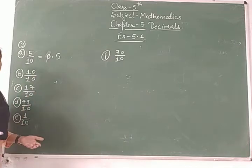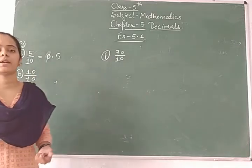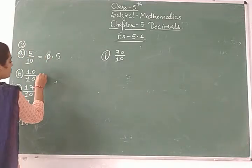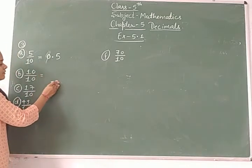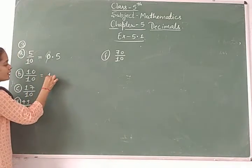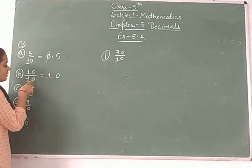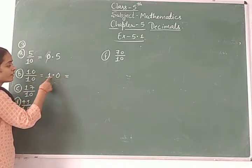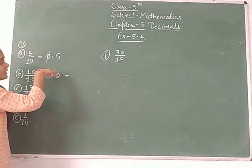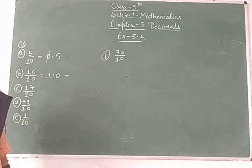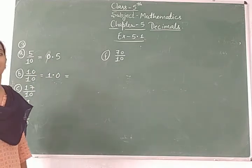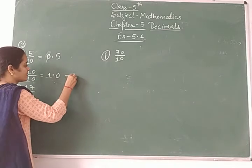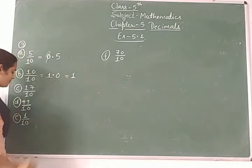For ten upon ten: ten divided by ten equals one whole. Write it as 1.0 — place the point, and write zero after the point. So ten upon ten equals 1.0.